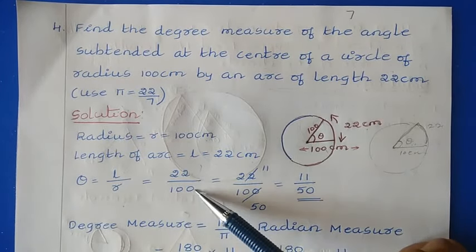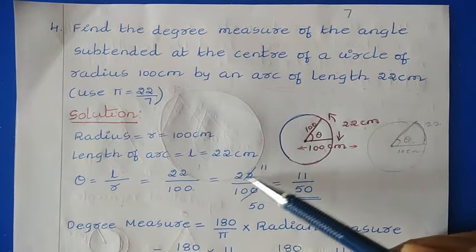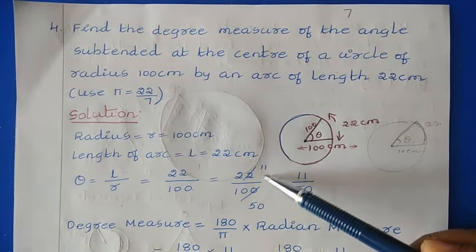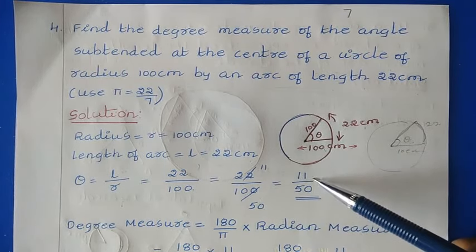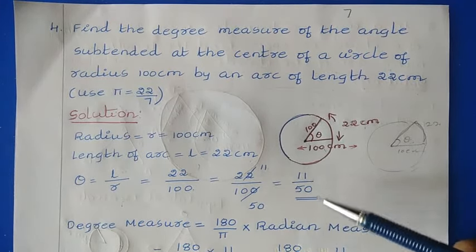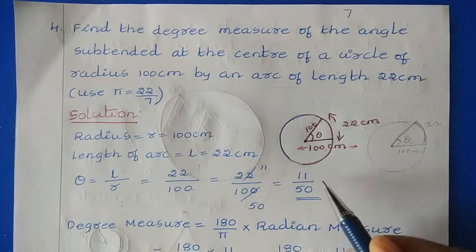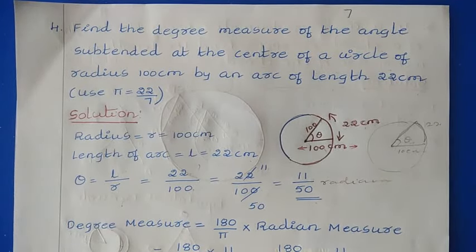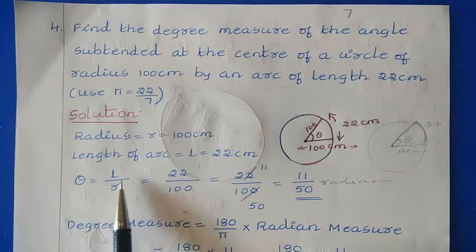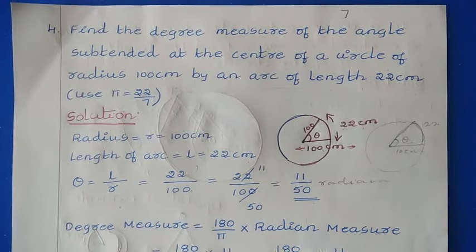Using the formula θ = L/R: 22 divided by 100. After cancellation — two 11s are 22 and two 50s are 100 — we get 11/50. This answer of 11/50 is in radians, because whenever you use the formula θ = L/R, the answer is always in radians.